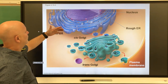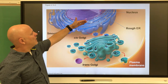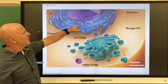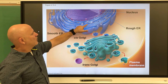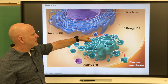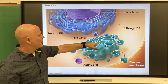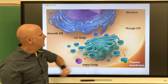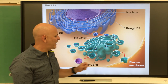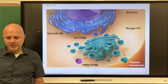This shows the whole process: the rough ER, with its ribosomes, makes proteins; the rough ER packages those into vesicles; then they go to the Golgi apparatus where they can be modified. This also shows those products leaving the cell.